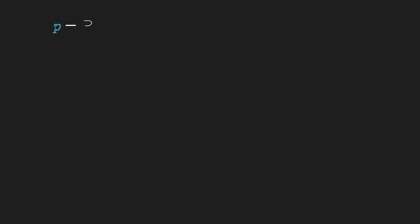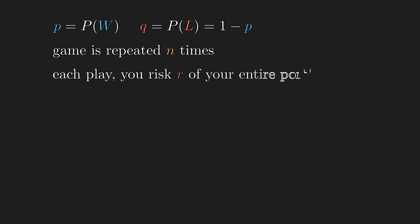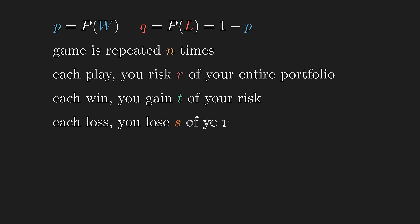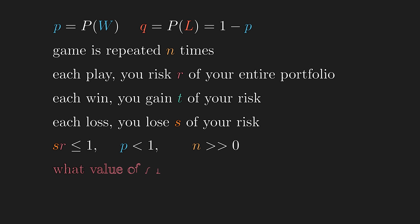Let's define the problem formally. There is a game where you know the probability of winning P and losing Q = 1 − P. The game is repeated N times; each play you risk a fixed percentage R of your portfolio. Each win gains T times R and each loss loses S times R. You cannot have a negative balance, you are not guaranteed to win, and N is large. What fraction of your portfolio should you risk each play to maximize long-term average profit?